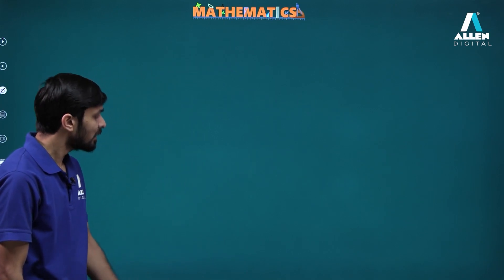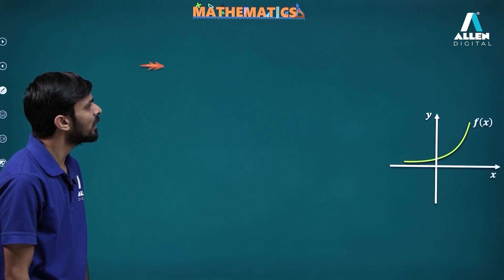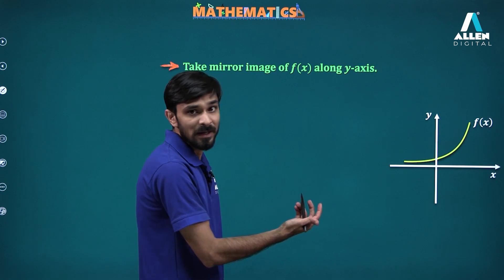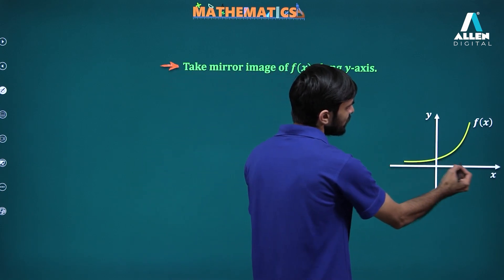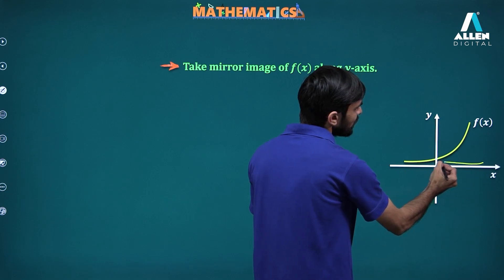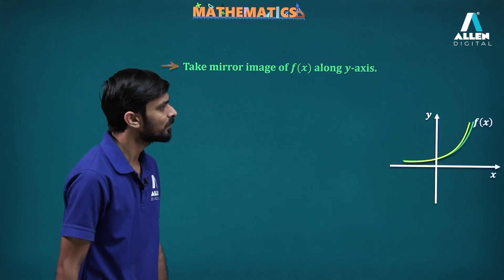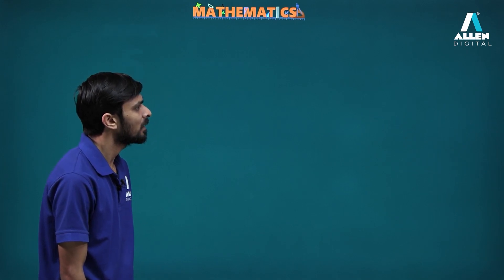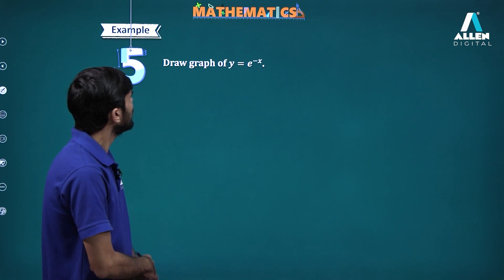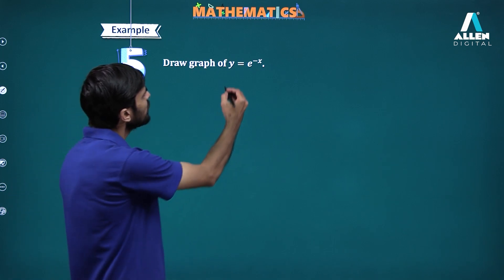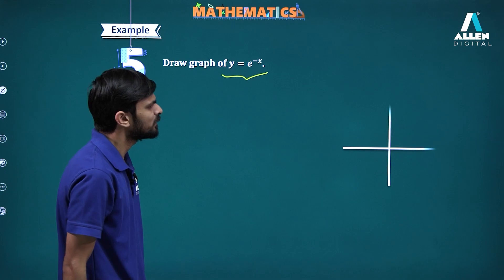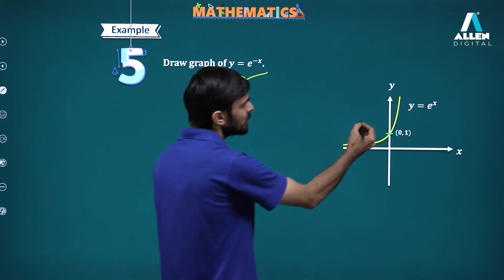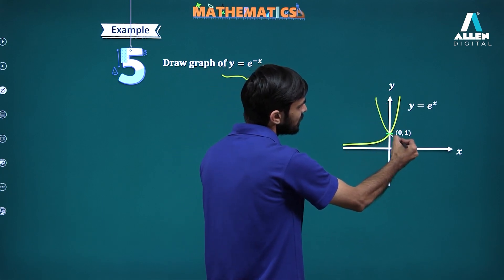When you need to transform f(x) to f(minus x), if you have f(x) here, you are just going to take the reflection of this graph in the y-axis. For example, to draw the graph of y equal to e to the power minus x — this is e to the power x — just take the reflection of this graph in the y-axis and done.